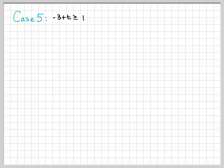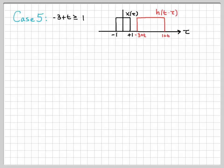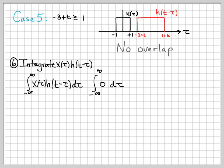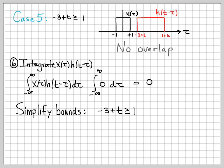Case 5: h(t minus τ) has slid completely past x(τ) with no overlap. Evaluating the convolution integral is easy — we just integrate 0, which gives 0. The bound was minus 3 plus t ≥ 1, which simplifies to t ≥ 4. So y(t) equals 0 for t ≥ 4.